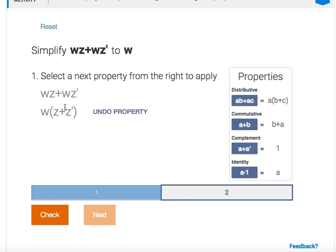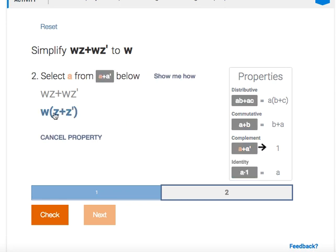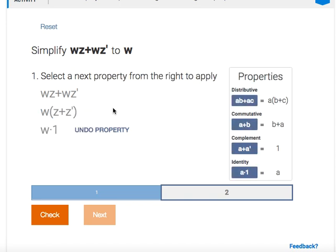I'm going to try again. So z or z prime. I'm going to apply this law here. So it's asking me to select just the a. So I'm going to select the z there. Now it's asking me to select the a prime part. So I'm going to select the z prime. And then I'm going to go ahead and apply the property.